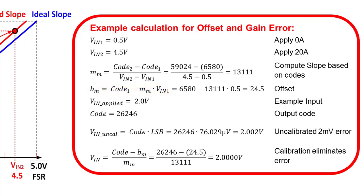Once you have the offset and slope, you can correct the error for any input. In this example, we apply a 2 volt input signal. The uncalibrated reading for this is 2.002 volts, so there is a 2 millivolt error from gain and offset. Applying the correction using the calibration coefficients, we can eliminate the error and determine the actual input signal of 2 volts.